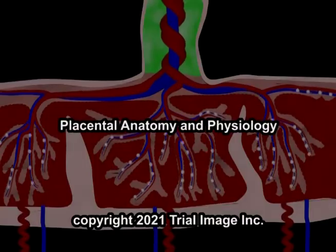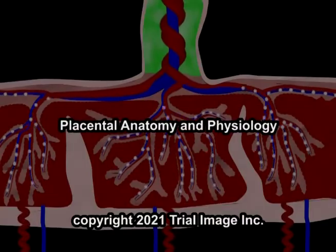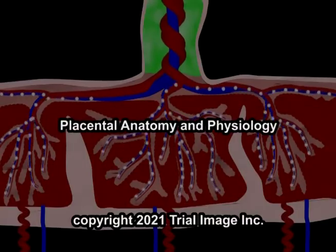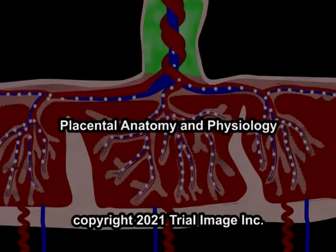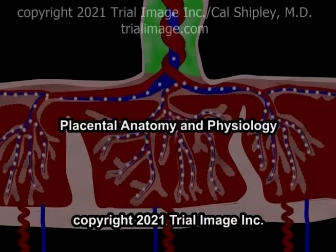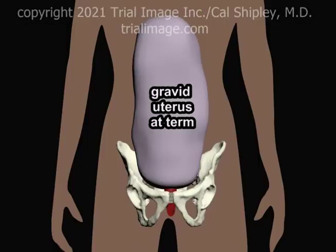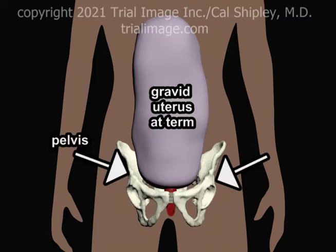This is Dr. Cal Shipley with a review of the anatomy and physiology of the human placenta. For this presentation, I am going to be looking at a uterus which contains a fetus at about nine months of gestation, also known as a gravid uterus at term.